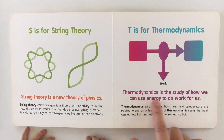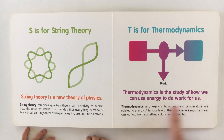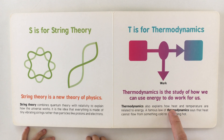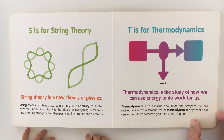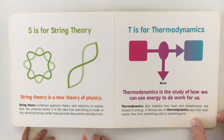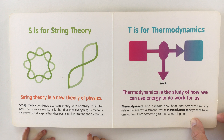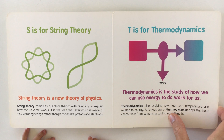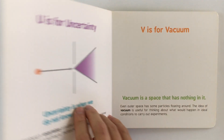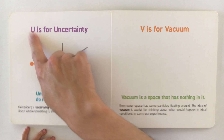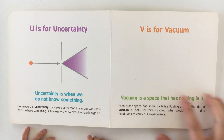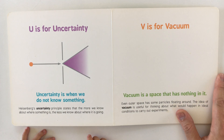T is for thermodynamics. Thermodynamics is the study of how we can use energy to do work for us. It also explains how heat and temperature are related to energy. A famous law of thermodynamics says that heat cannot flow from something cold to something hot.